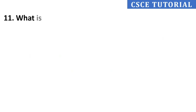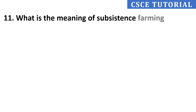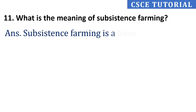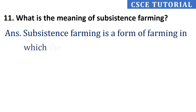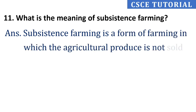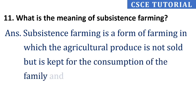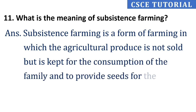Eleventh question: What is the meaning of subsistence farming? Its answer is, subsistence farming is a form of farming in which the agriculture produce is not sold but is kept for the consumption of the family and to provide seeds for the next sowing period.